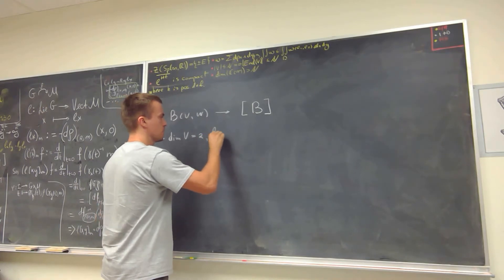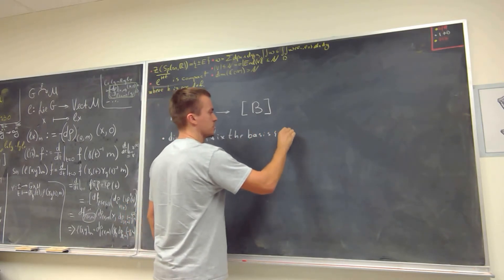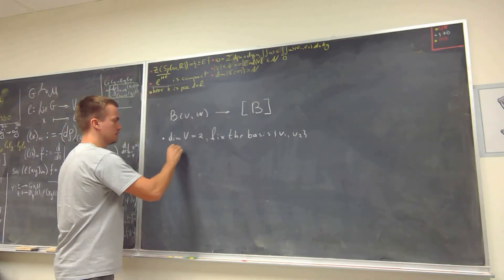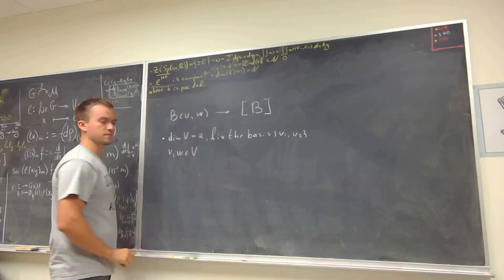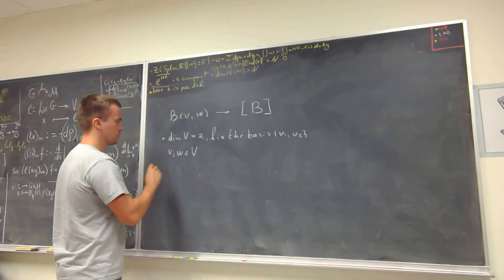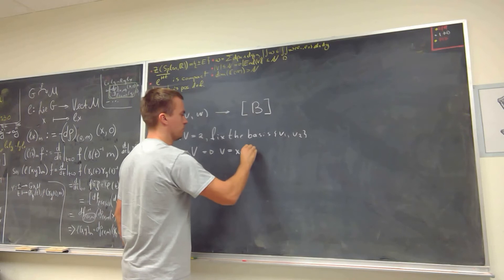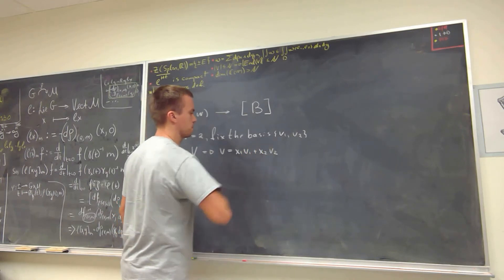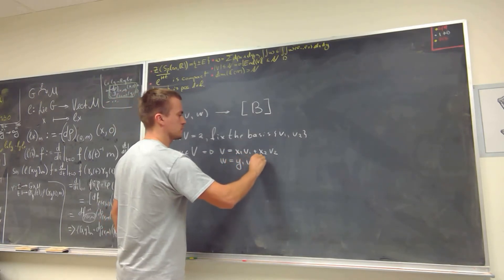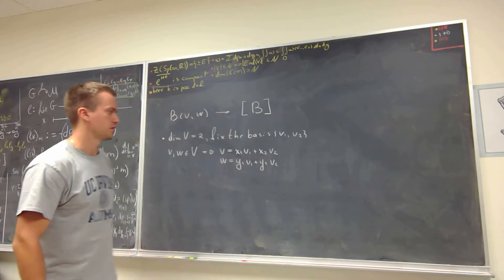I'm going to fix a basis and choose any basis for my vector space — I'll just take V1 and V2. Since I'm taking vectors from the vector space V, I can write my vector V in terms of the basis as X1·V1 + X2·V2, and my vector W as Y1·V1 + Y2·V2. Every time you have a vector space and a basis, you can write any vector in terms of that basis.